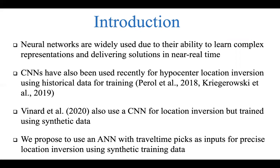At the recently concluded SEG annual meeting, we saw Wynard et al. also use a convolutional neural network, but in line with our strategy here, they also used synthetic data to train the network. In contrast to their approach, what we propose here is the use of an artificial neural network with p-wave travel time picks as inputs for precise location inversion.